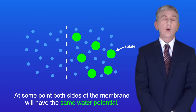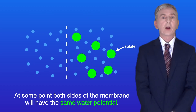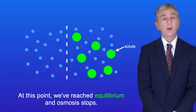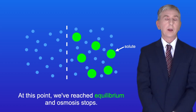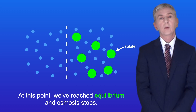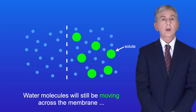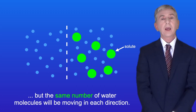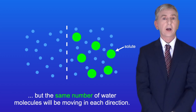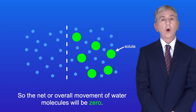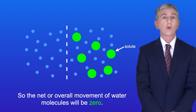Now at some point, both sides of the membrane will have the same water potential. At this point, we've reached equilibrium and osmosis stops. Water molecules will still be moving across the membrane, but the same number of water molecules will be moving in each direction. So the net or overall movement of water molecules will be zero.